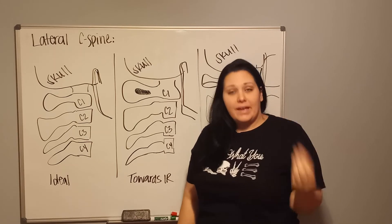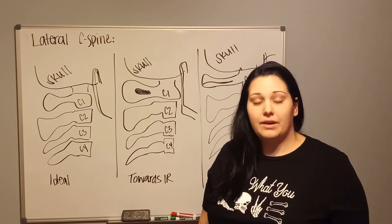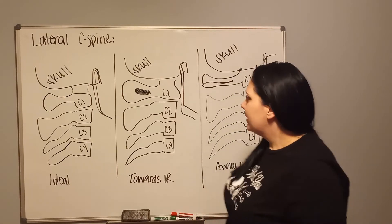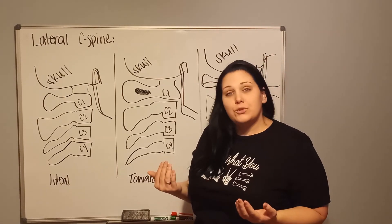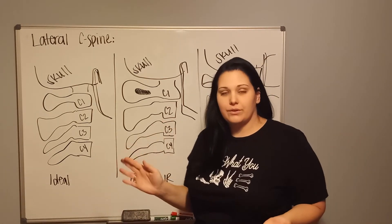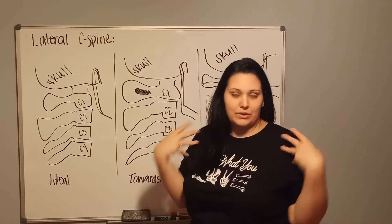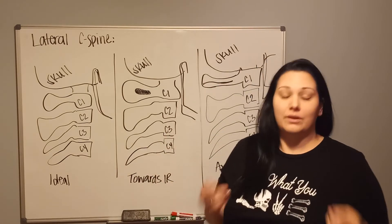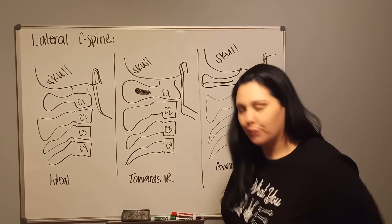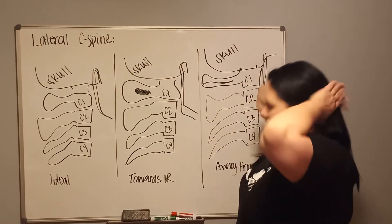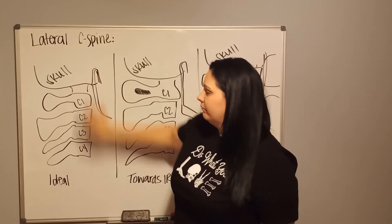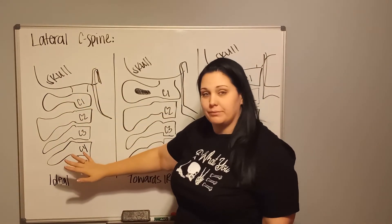But for the head tilt specifically towards or away from the IR, there's really only one thing that you're going to want to focus on, because that's going to tell you which way the head was tilted. And that is the posterior arch of C1. This is where you get to see my lack of artistic ability, but I did my best. So here we go. This is somebody in a lateral position. This is your ideal situation.